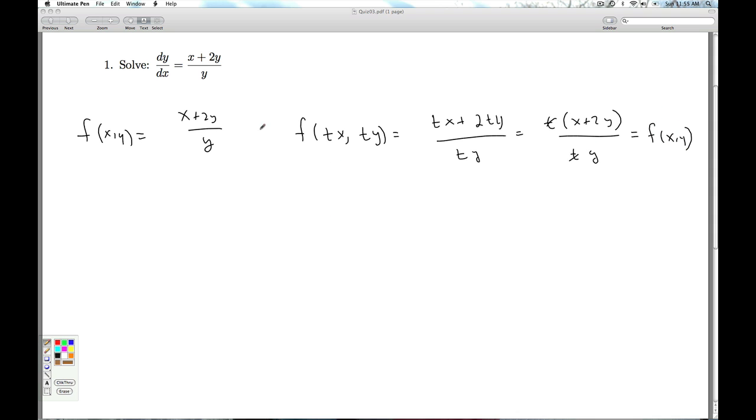Okay, so this is homogeneous of degree zero. And so we have a differential equation of the form y' equals f(x, y), where this function is homogeneous of degree zero. That means we have a homogeneous differential equation.